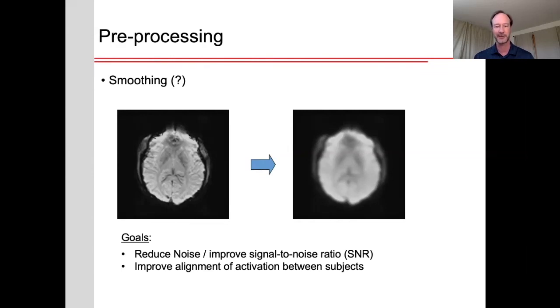There are also cases where you perhaps might not want to perform smoothing. So for example, if you wanted to map things to a cortical surface, you might want to do that first and then smooth things on the cortical surface. Or if you want to do some fancier multivariate pattern analyses, then you don't want to necessarily perform spatial smoothing because you would destroy some of those interesting patterns.